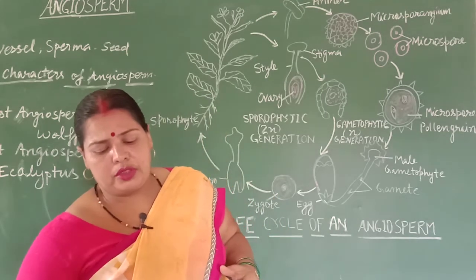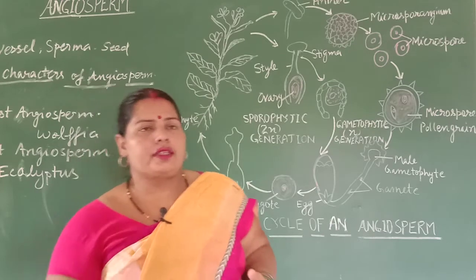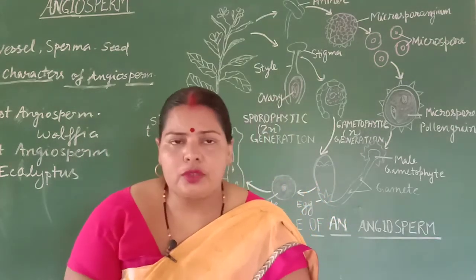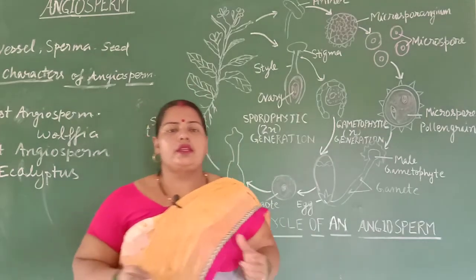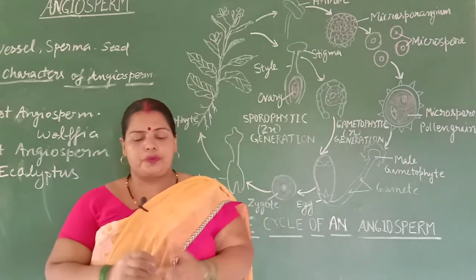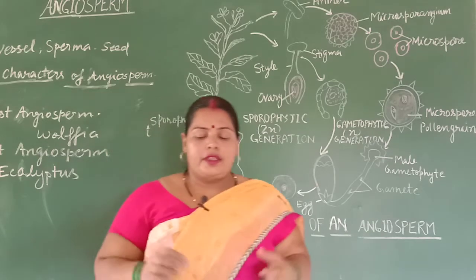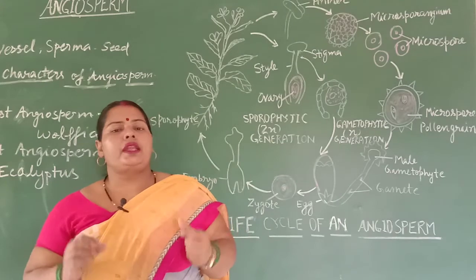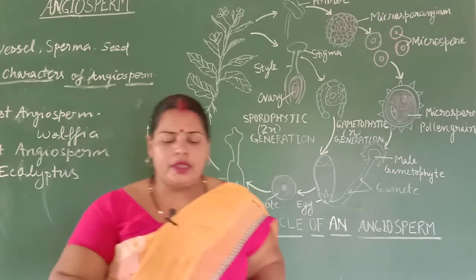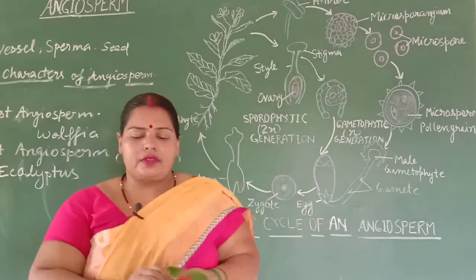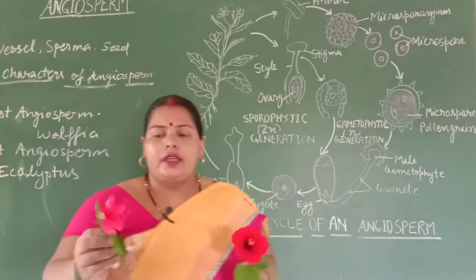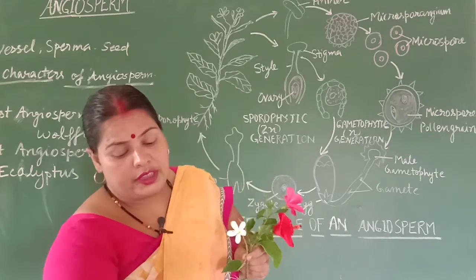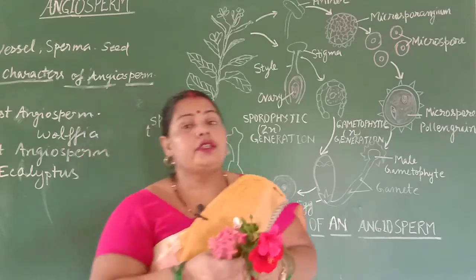Today we are going to learn the next topic: the life cycle of the angiosperm. The flower is a shoot-modified structure having the male and female sex organs. You can see different types of very beautiful flowers in our locality, with very beautiful petals and sepals that attract attention.